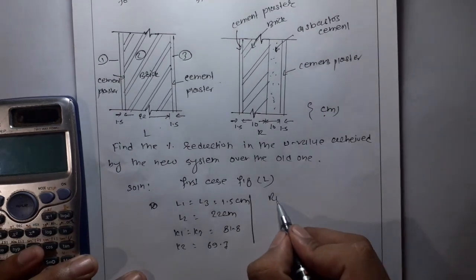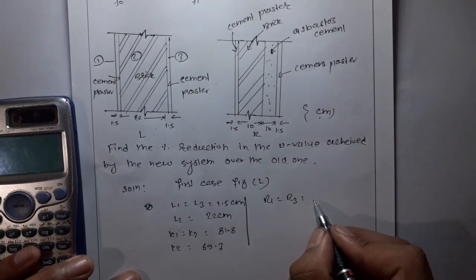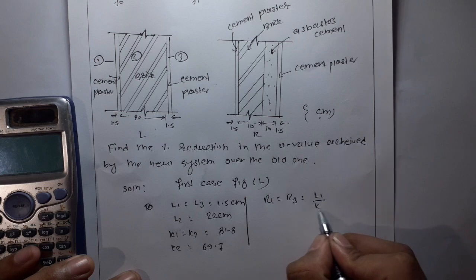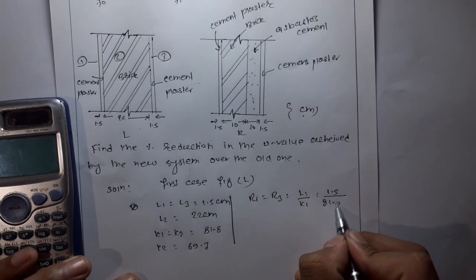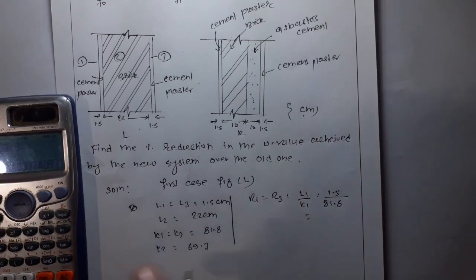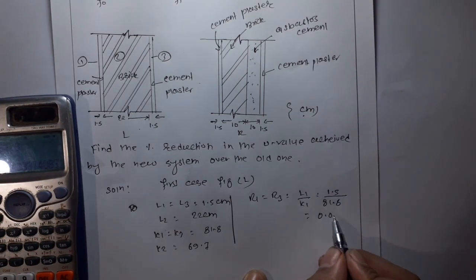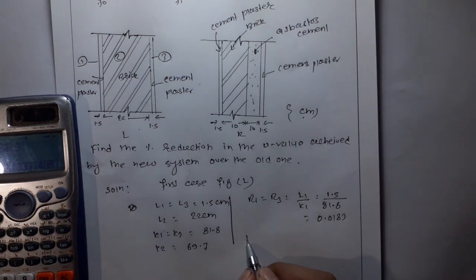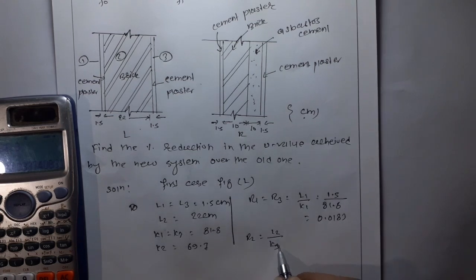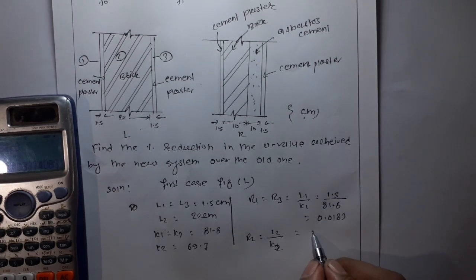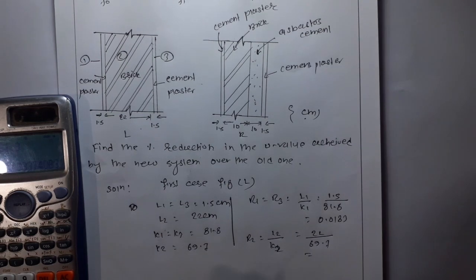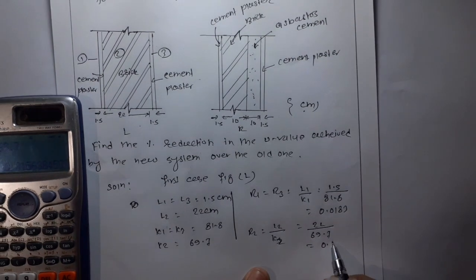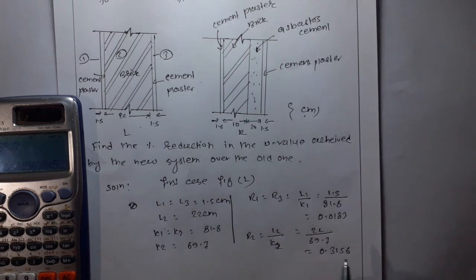R1 is equal to R3. So L1 upon K1, 1.5 divided by 81.8 equals 0.0183. L2 upon K2, 22 by 69.7, equals 0.3156.